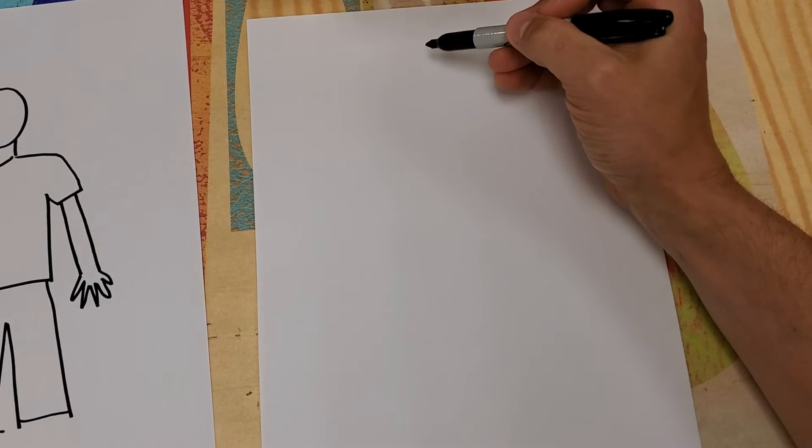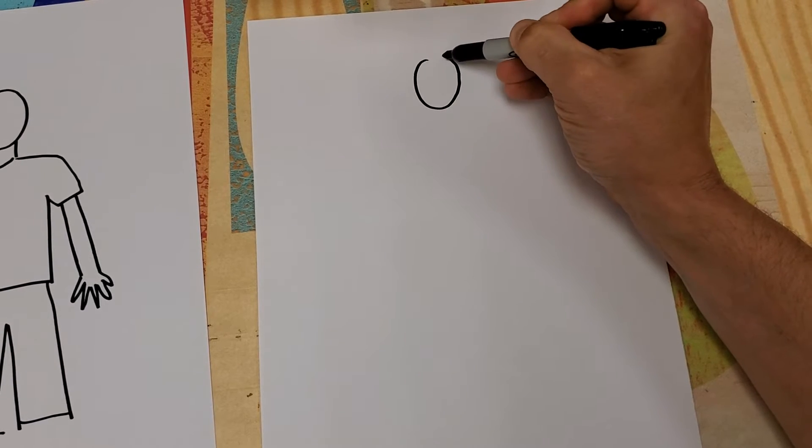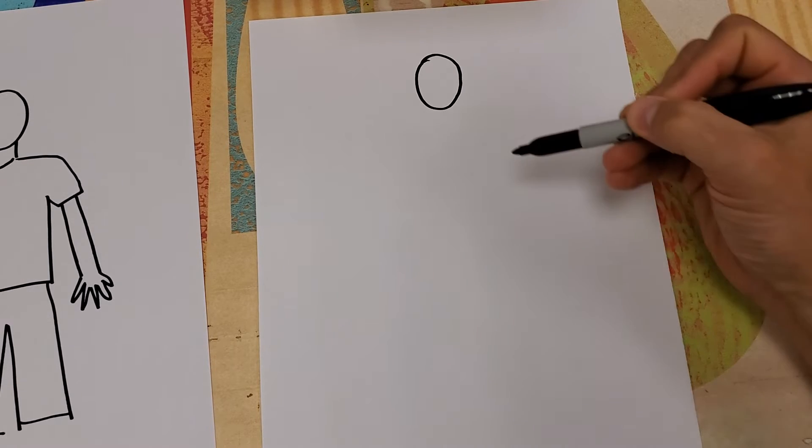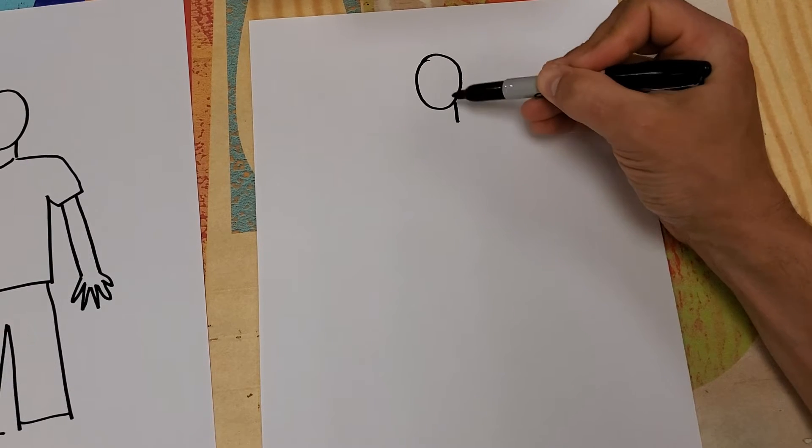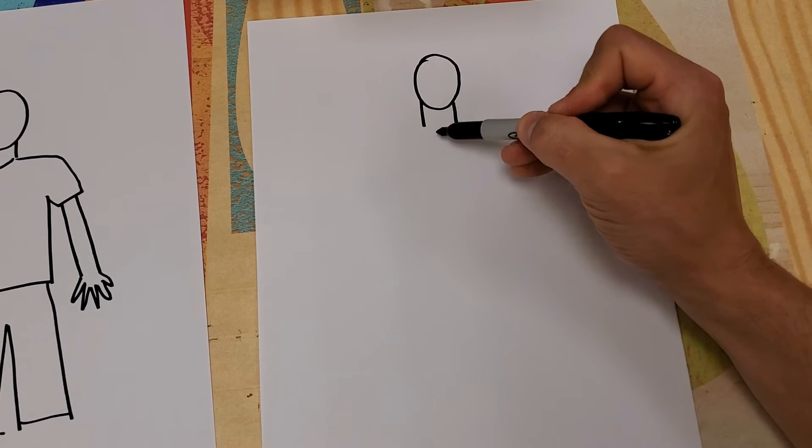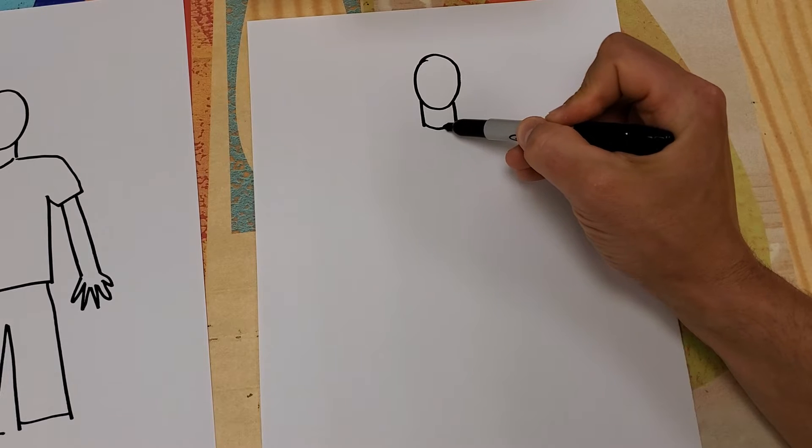So as I said, near the top, I'm going to toss in a nice oval for myself. Two lines on either side will bring down my neck. And I'm going to show the top of my t-shirt here around my neck is a little curve.